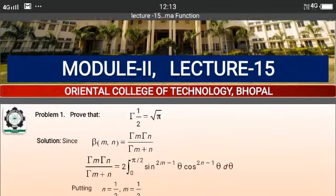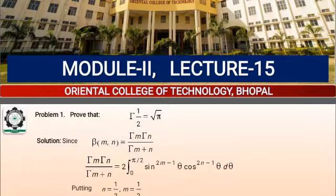First question: Prove that Gamma(1/2) equals under root pi. We know the relation between Beta and Gamma functions: Beta(M,N) can be written as Gamma(M) times Gamma(N) upon Gamma(M+N), and Beta(M,N) can also be written as twice the integration from 0 to pi/2 of sine^(2M-1)(theta) cos^(2N-1)(theta) d-theta.